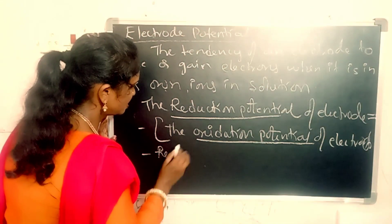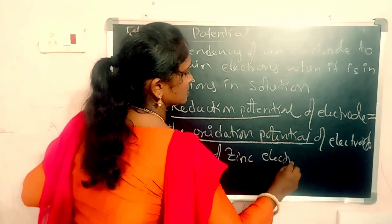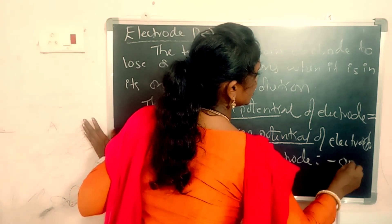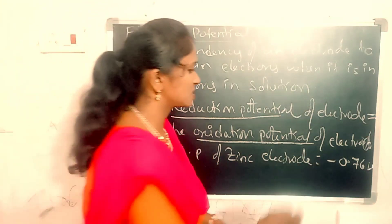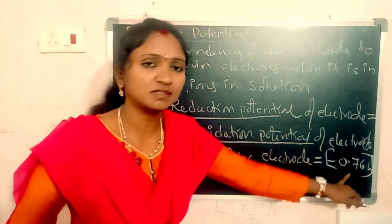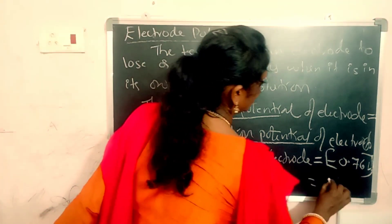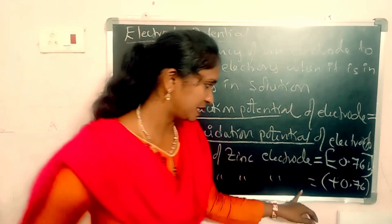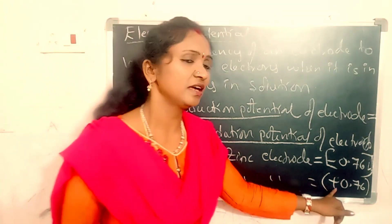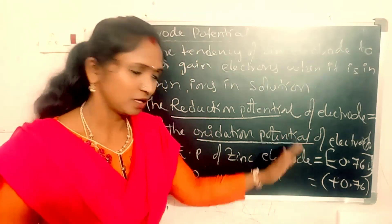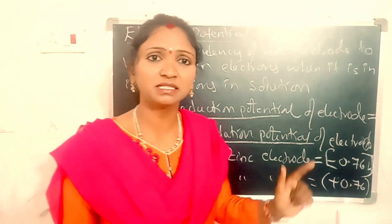For example, the reduction electrode potential of zinc electrode is minus 0.76 volts. The oxidation electrode potential of zinc electrode is equal to plus 0.76 volts. So both are inversely proportional. The electrode potential is measured in volts.